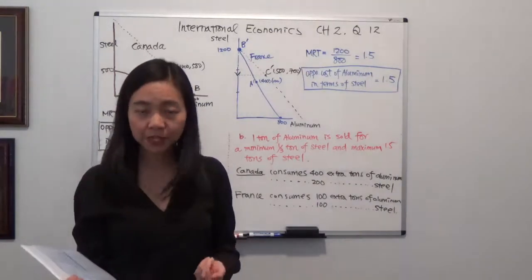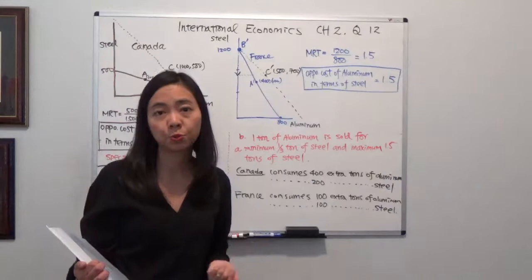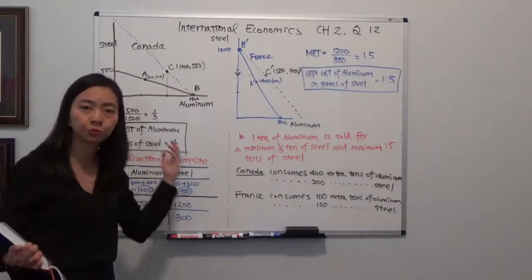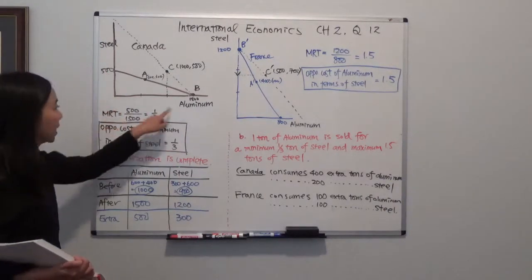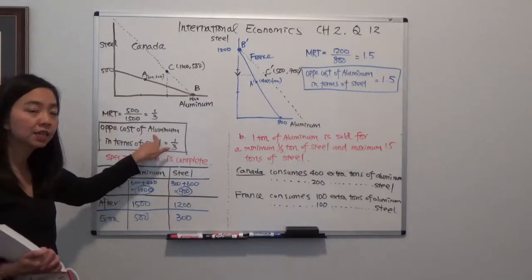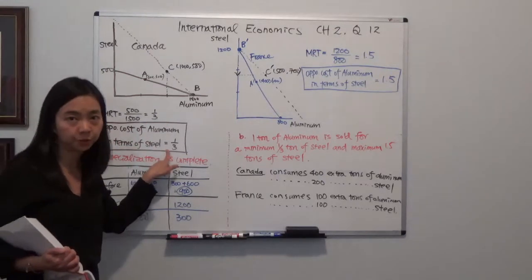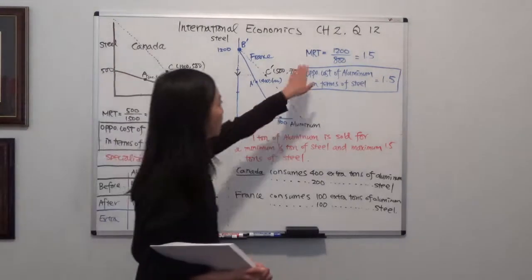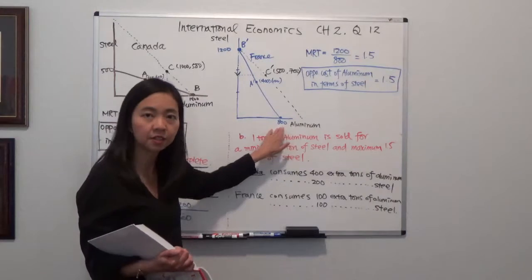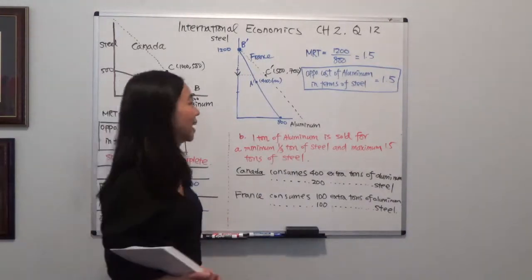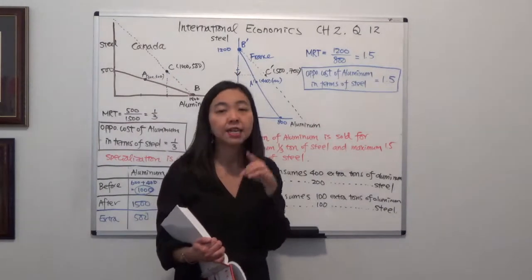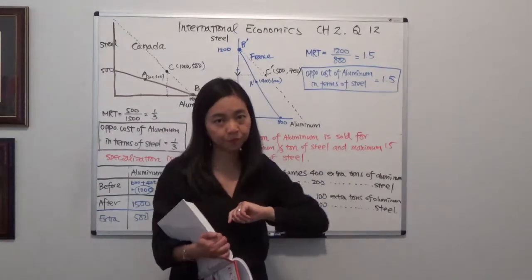The next part requires us to find the marginal rate of transformation (MRT), which is just the slope of the production possibility curve. In Canada, the MRT equals 500 divided by 1500, which gives you one-third — meaning the opportunity cost of one ton of aluminum is one-third ton of steel in Canada. In France, the MRT equals 1200 divided by 800, which equals 1.5 — meaning the opportunity cost of one ton of aluminum is 1.5 tons of steel in France.